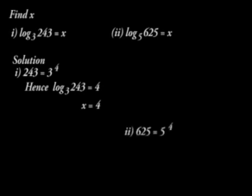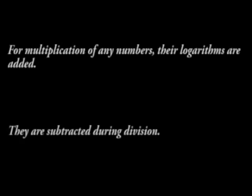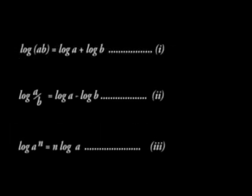625 can be written as 5 raised to power 4. And therefore, log to base 5 of 625 equals x is equal to 4. And x is equal to 4. Over to laws of logarithms. For multiplication of any number, their logarithms are added. They are subtracted during division. Hence, we have the three laws of logarithms.